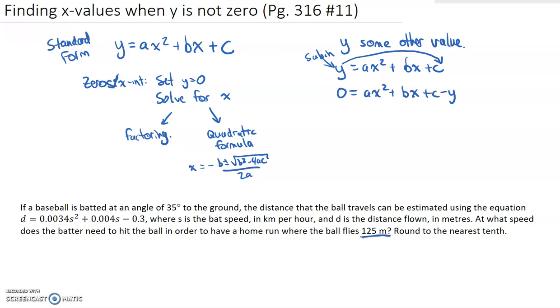That's going to be what we're putting in, not for the y in this case, but we're going to put it in for d. Then we're going to subtract 125 from both sides, solve that using—it doesn't look like it's going to be factorable, so we're going to have to use the quadratic formula, and then we'll be able to see what we get. And we'll analyze that at the end and look at a graph. So let's do that here.